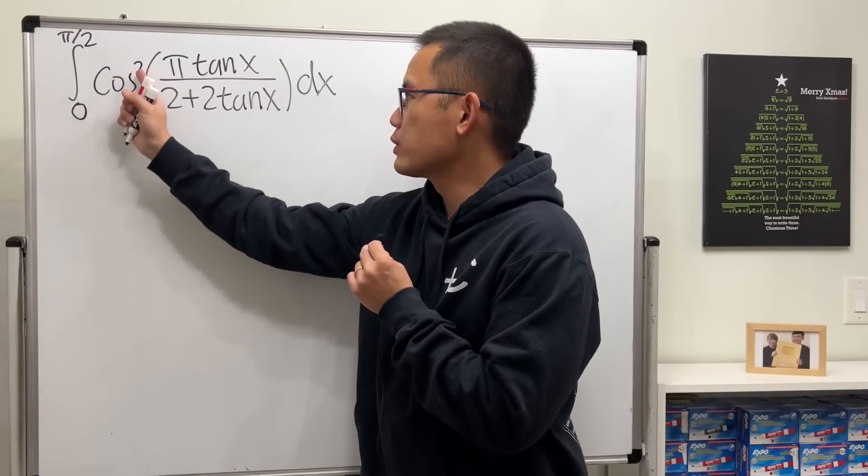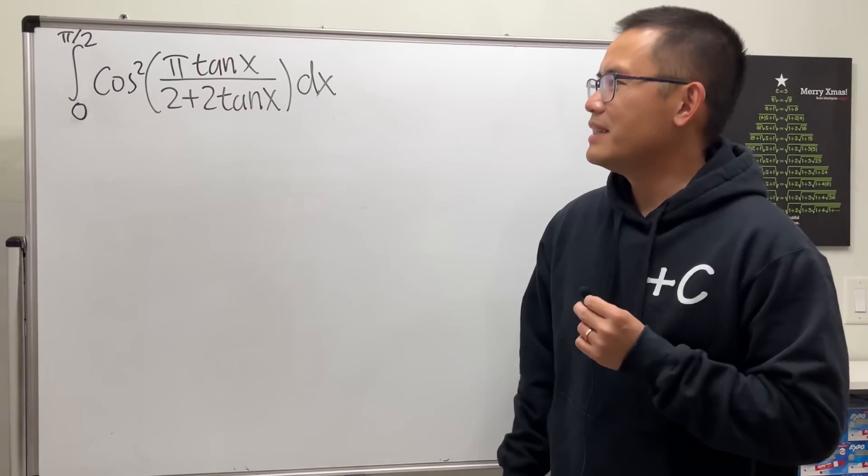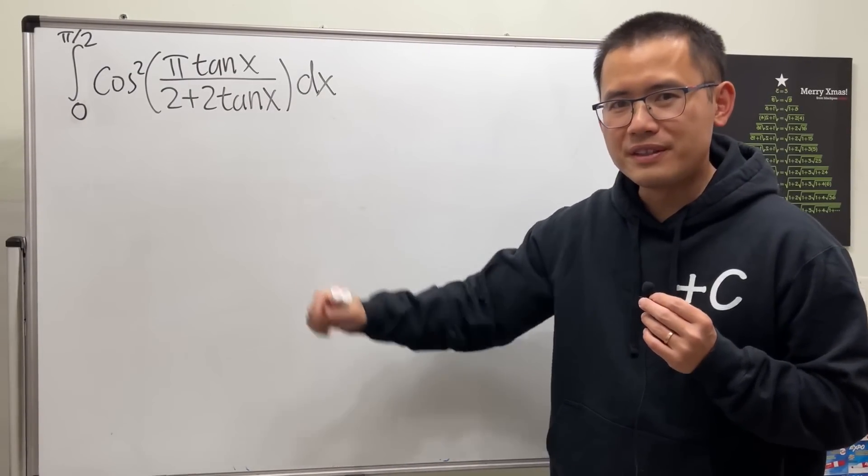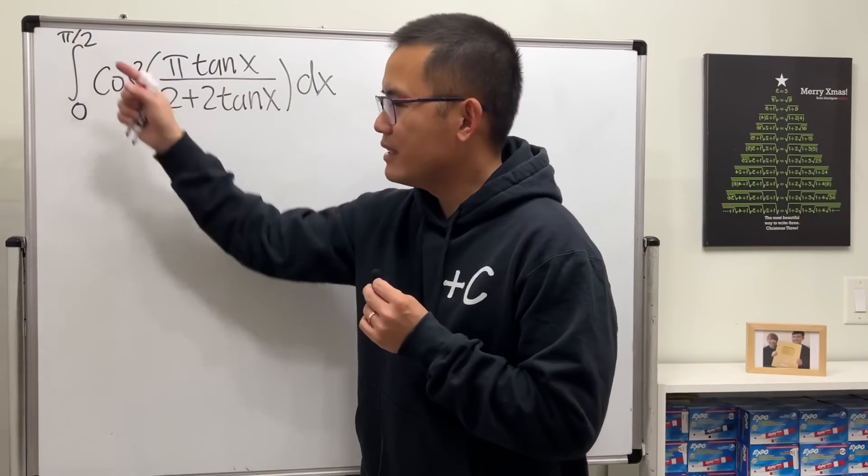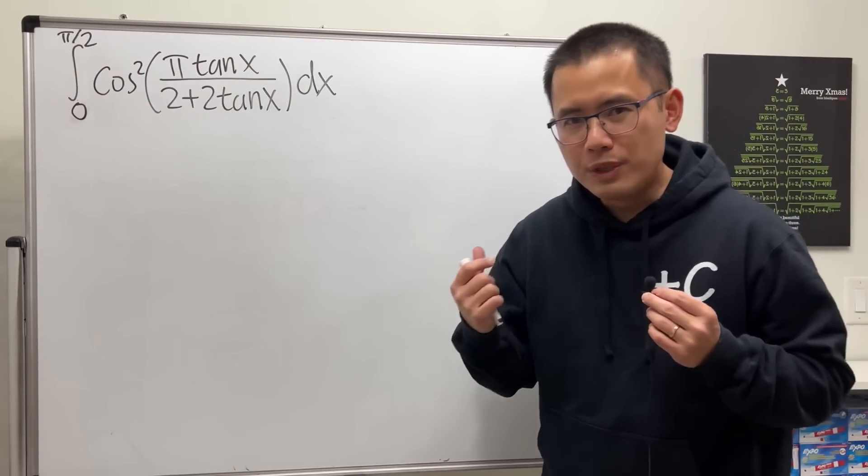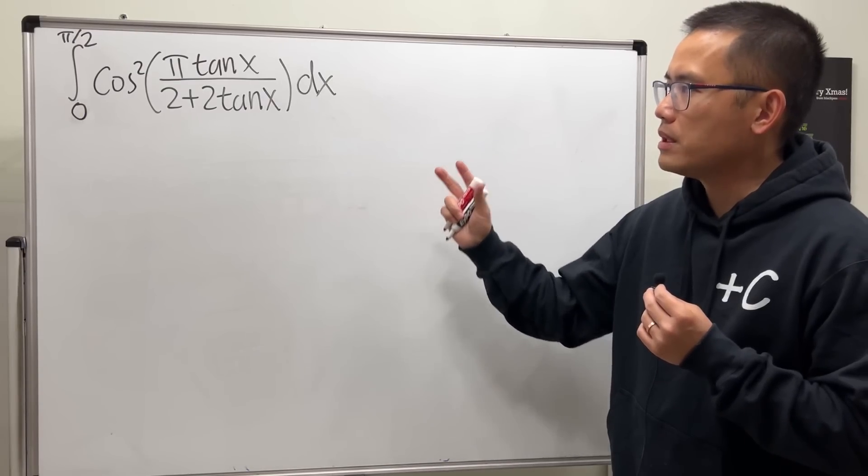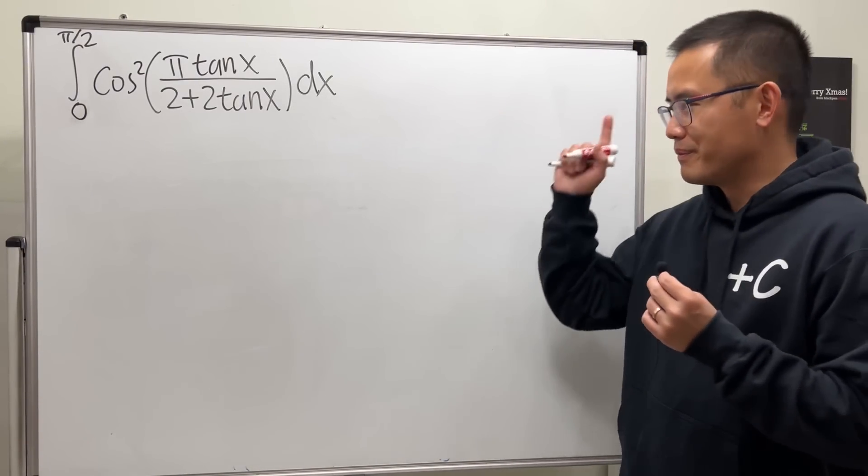We have the integral, and we have cosine squared of this thing. By looking at it, you should feel like we shouldn't be integrating this directly by finding an antiderivative, especially since this is a definite integral. So what we should really be thinking is, can we use an integral property to help us out? And the answer is yes. Which one, though? This one.